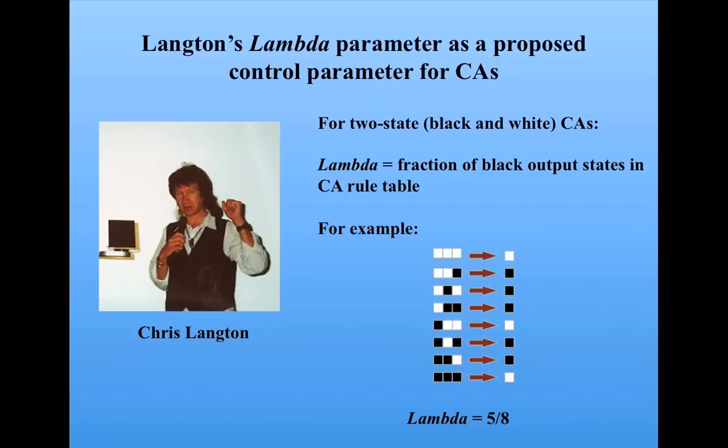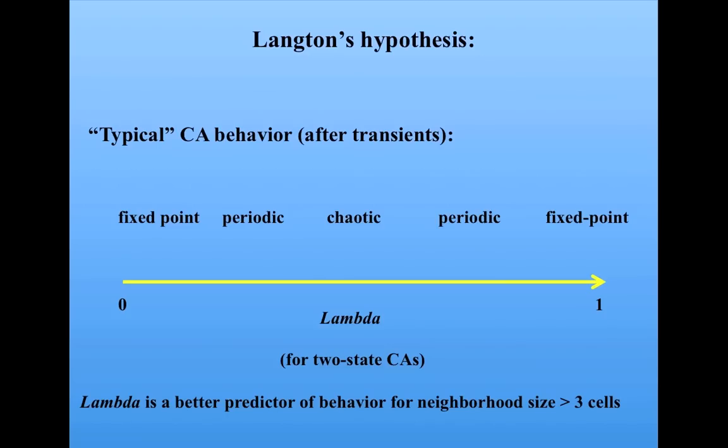Langton was able to show that in some cases, the lambda value of a cellular automaton was a fairly good predictor of its behavior. Langton's hypothesis was that the typical behavior of cellular automata with a given lambda value would go along this scale, from fixed point behavior at lower levels of lambda, and as lambda is increased, we would see periodic and then chaotic behavior.